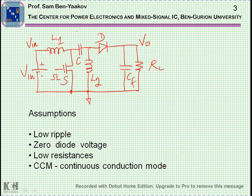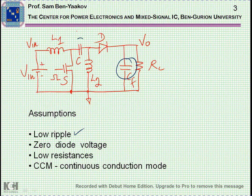Now, before I start with the SEPIC — which is shown here — there are some assumptions that we are making when doing the analysis. The first would be that the ripple is low. We have an output capacitor here, and also a coupling capacitor which I'll talk about in a minute. Both are relatively large capacitors, and we are assuming that the ripple on them — when you look at the voltage — is rather small.